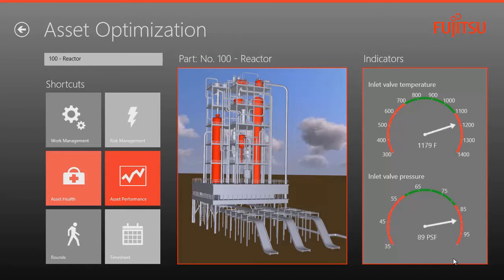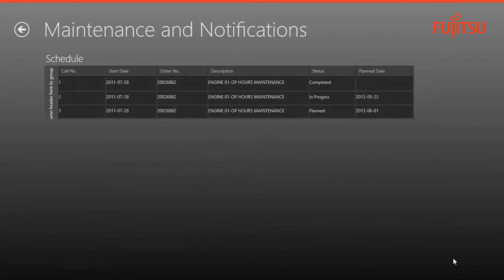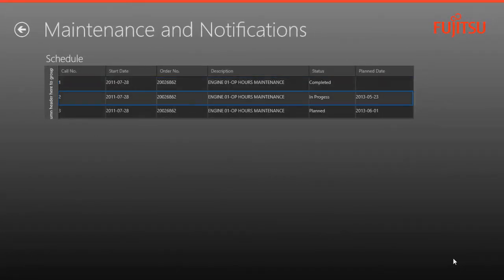When I click on asset health, the application shows me the history of alerts pertaining to refinery unit 1. I can also see the history of pertinent KPIs such as temperature and pressure referencing the components in question. I can click on the maintenance notifications and see that there's a planned maintenance window coming up tomorrow. I'll go ahead and work with my production supervisor to schedule the work to be completed during that window.